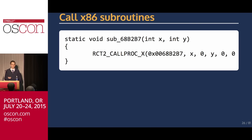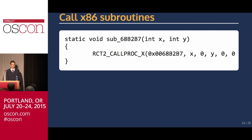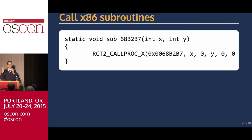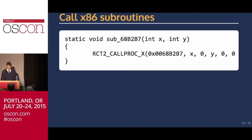They did this without needing to decompile everything first — you can actually call into assembler from C. They built library functions, like RCT2 call proc x, that call an address in the original .exe and set a bunch of register flags. That way the game will execute a subroutine, finish, and return control back to the C code. So you can go between C and x86 without needing to decompile the entire thing first. You call into C for parts you haven't decompiled yet, then go back into C code when those x86 functions are done.